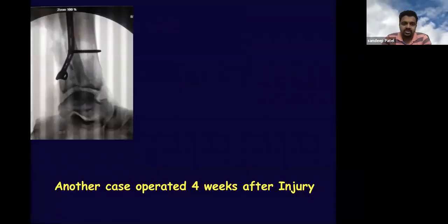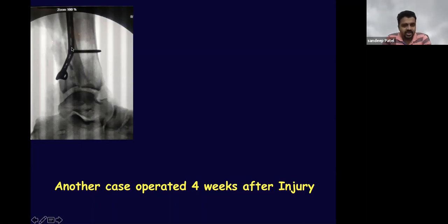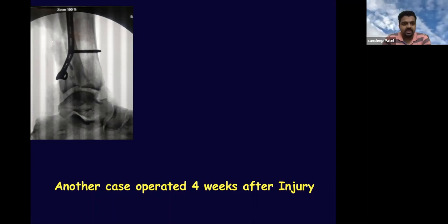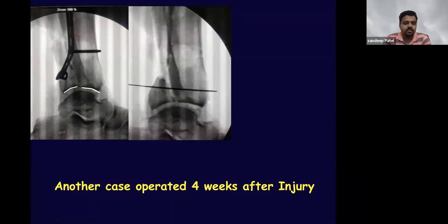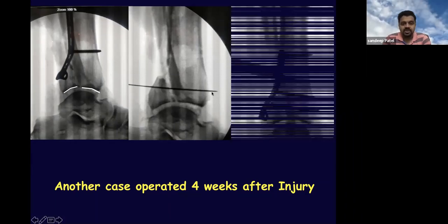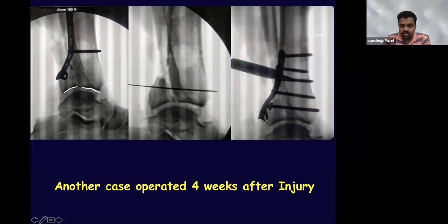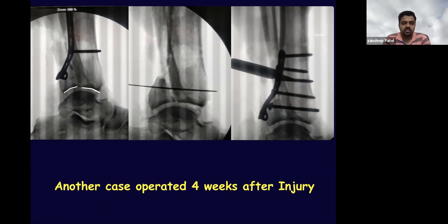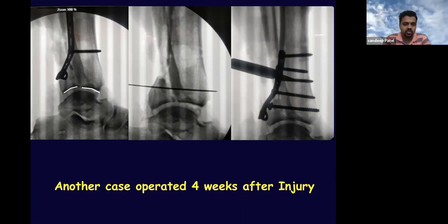However, this is not always the case. In another case operated four weeks after injury, even after buttressing, the reduction was not anatomical — a non-congruent reduction. The textbook teaching is: don't buttress first; achieve reduction first using a cannulated guide wire for a small fragment cannulated system, then put the screw and obtain a congruent reduction, then put the plate. As you get more expertise, buttress reduction can be done in most cases, but this case is shown to illustrate the textbook technique.